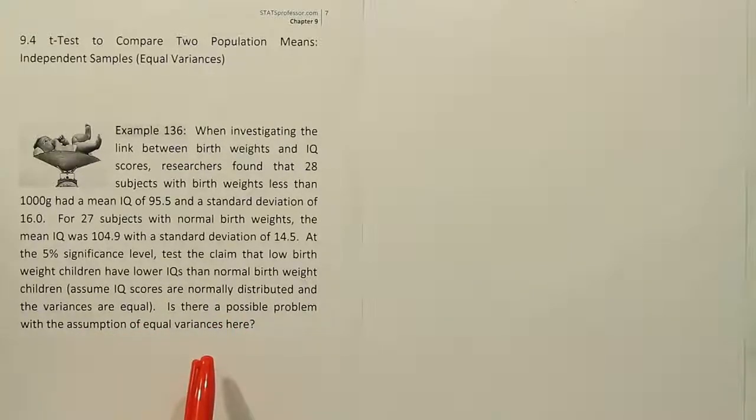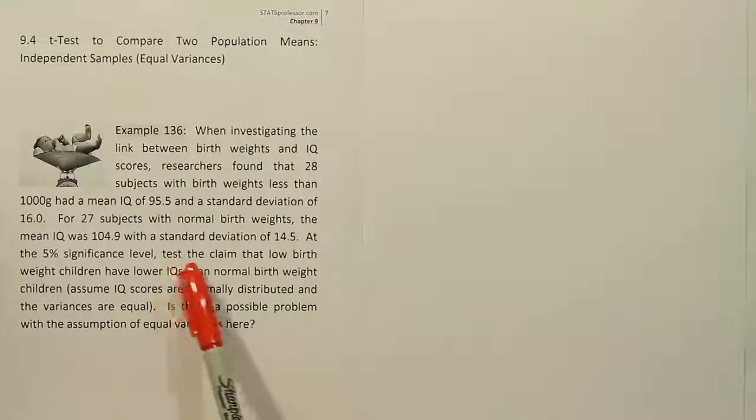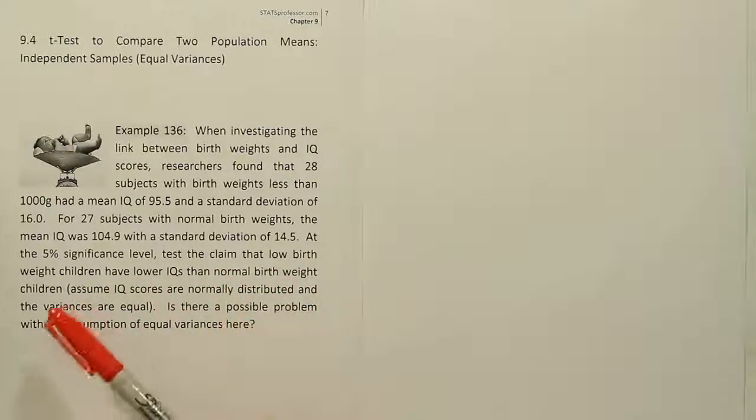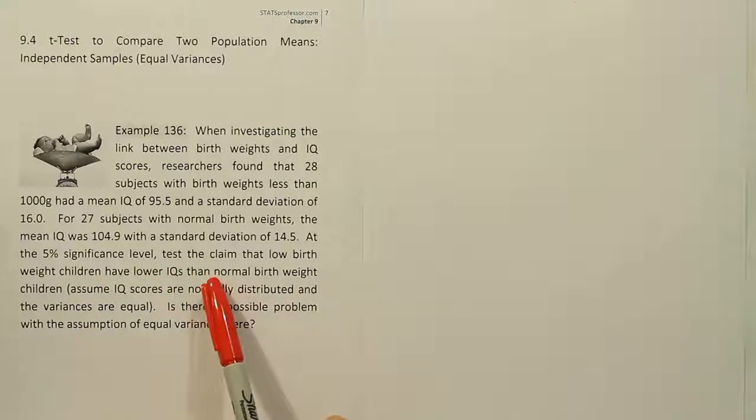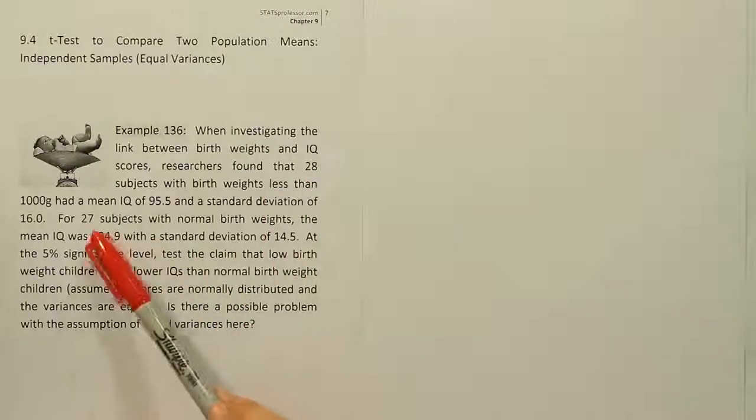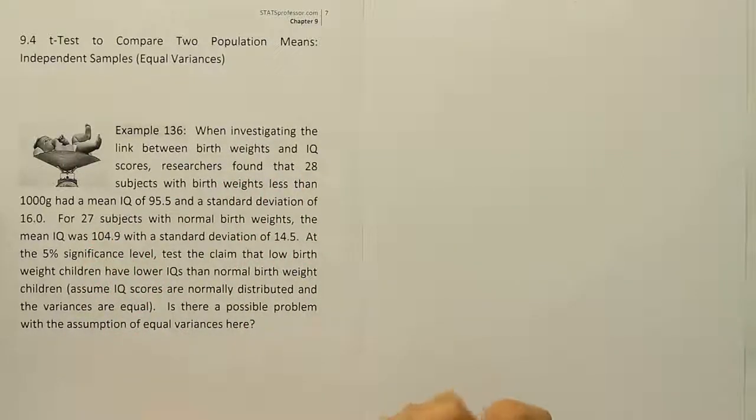When I read the problem, the first thing I want to notice is that it says test the claim. So this is a hypothesis testing problem. And I can also tell they're comparing two groups, looking at low birth weight children and normal birth weight children. They want to compare their IQ scores. So I believe this is probably going to be an independent t-test to compare two means. I say the t-test as opposed to the z-test because the sample sizes are both small here, 28 and 27. So small sample sizes, two independent groups being compared. It sounds like an independent t-test.